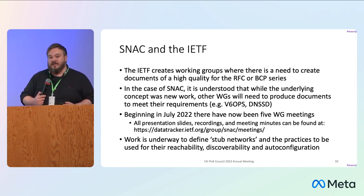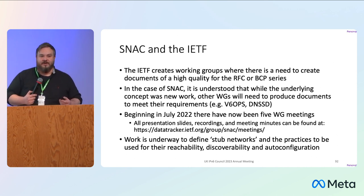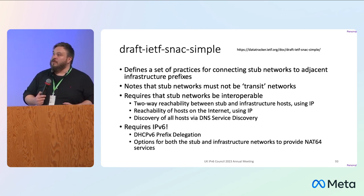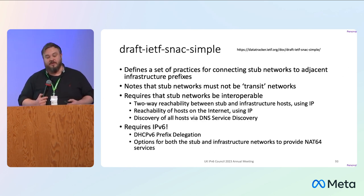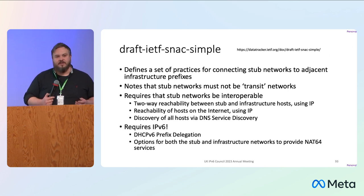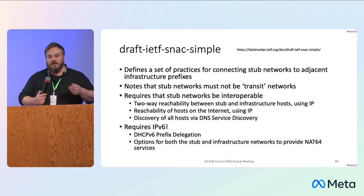In this working group in particular, work is underway to define stub networks and the practices used for reachability between those and your infrastructure networks, as well as discoverability and auto-configuration. The draft defines a set of practices for connecting stub networks to adjacent infrastructure prefixes. It notes that stub networks are very specifically stub networks because they are not transit networks — you do not hop across them to get between different infrastructure networks. They are stubbed off your Wi-Fi effectively.